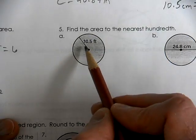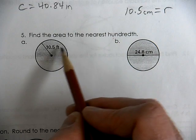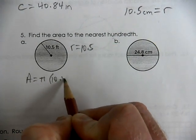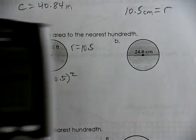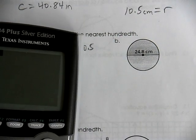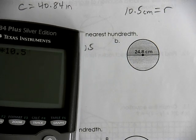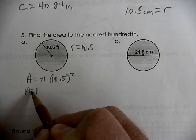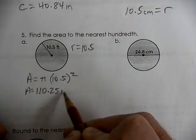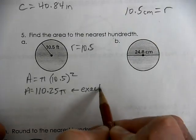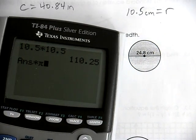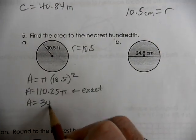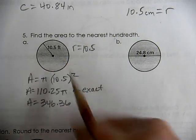Find the area to the nearest hundredth — that's a decimal. The radius is 10.5, so the area equals πr². We square 10.5: 10.5 × 10.5 = 110.25. So 110.25π is the exact answer. Multiplying by π gives us 346.36 feet squared.